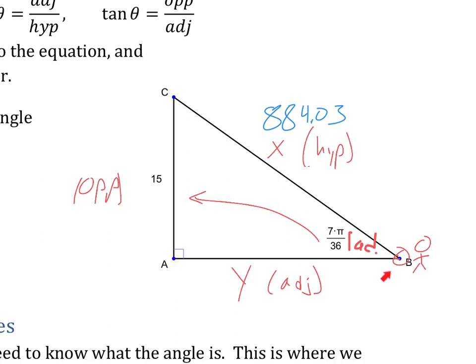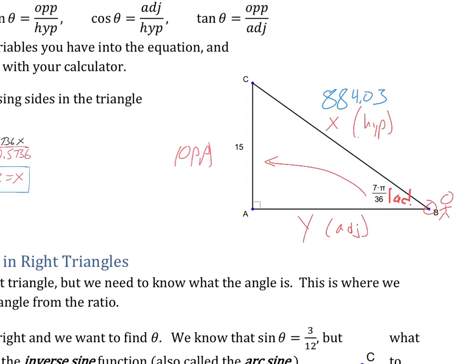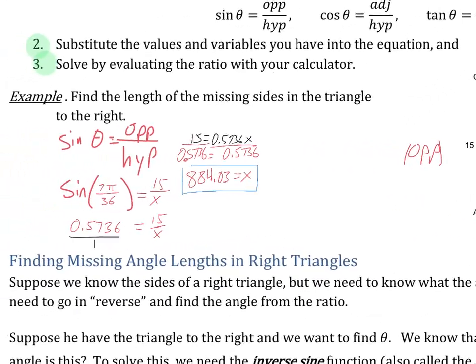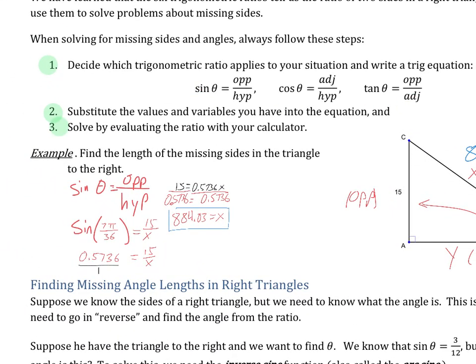Now we need to find the adjacent. And we could reuse this side, but it's better, a good habit to not reuse this number you just found. For one, that's been rounded off now. And also, if we made a mistake, we don't want to reuse something that's a mistake. So let's, we were looking for the adjacent, and we know the opposite. Adjacent, opposite. Which one uses adjacent and opposite? Well, we look at our list or think through our list, and we have adjacent over opposite. Well, opposite over adjacent is tangent. So that one uses opposite adjacent. So we're going to use tangent here.